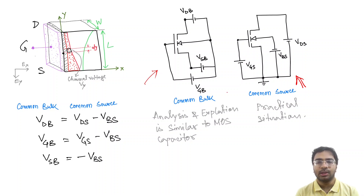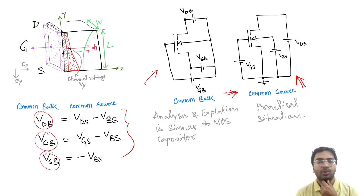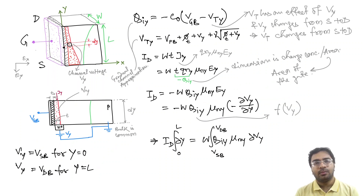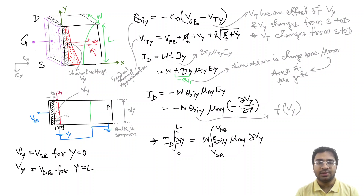In practice, we use the common source configuration. To convert from common bulk to common source, we use three basic equations: VDB = VDS − VBS, VGB = VGS − VBS, and VSB = −VBS. The approach we take is to consider a very small element dy in the device, develop an equation for that region, and then integrate over the entire channel to find the equation for the entire device.